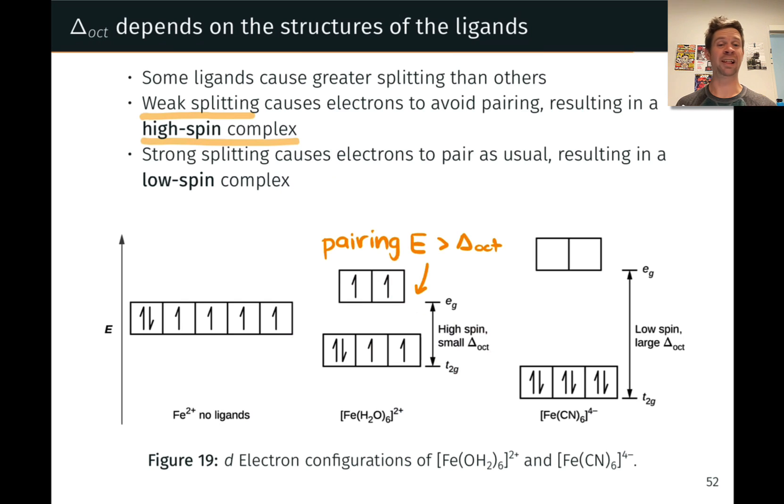And it leads to what we'll call a high spin complex. Before we get to the high spin, low spin terminology, I want to describe the low spin situation. Now what we want to note is that the extent of crystal field splitting, the size of delta oct, the size of this energy gap, depends on the identity of the ligand.